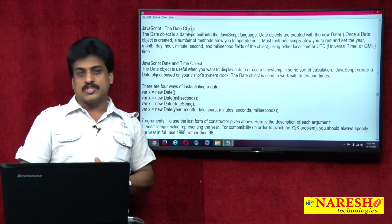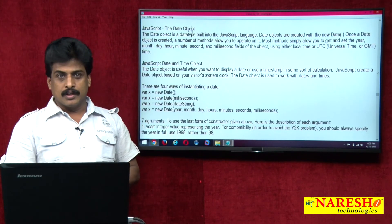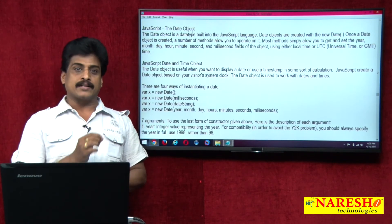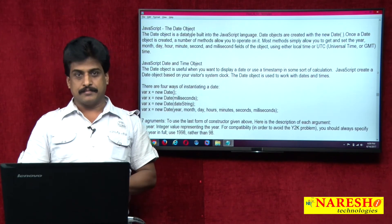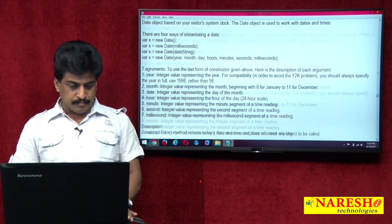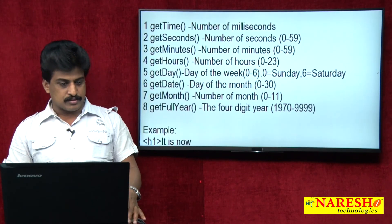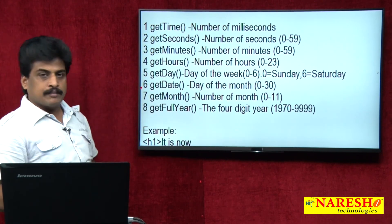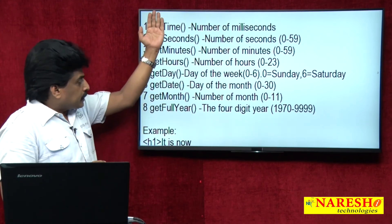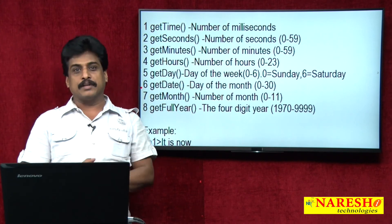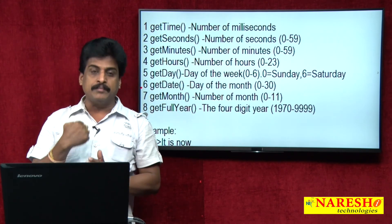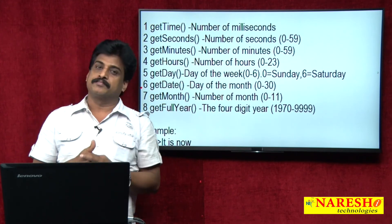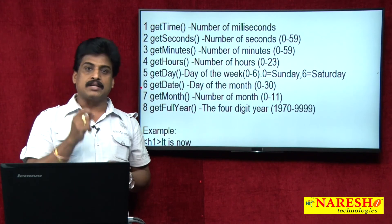At least one simple declaration I will write first. Once you declare the date object, a number of methods and properties we can access. There is a big list: getTime(), getSeconds(), getMinutes(), getHours(), getDay() — whatever get methods exist, all set methods are also available. Get means we are taking from the system date and time properties; set means we are giving to the system as per the business requirement of the client.